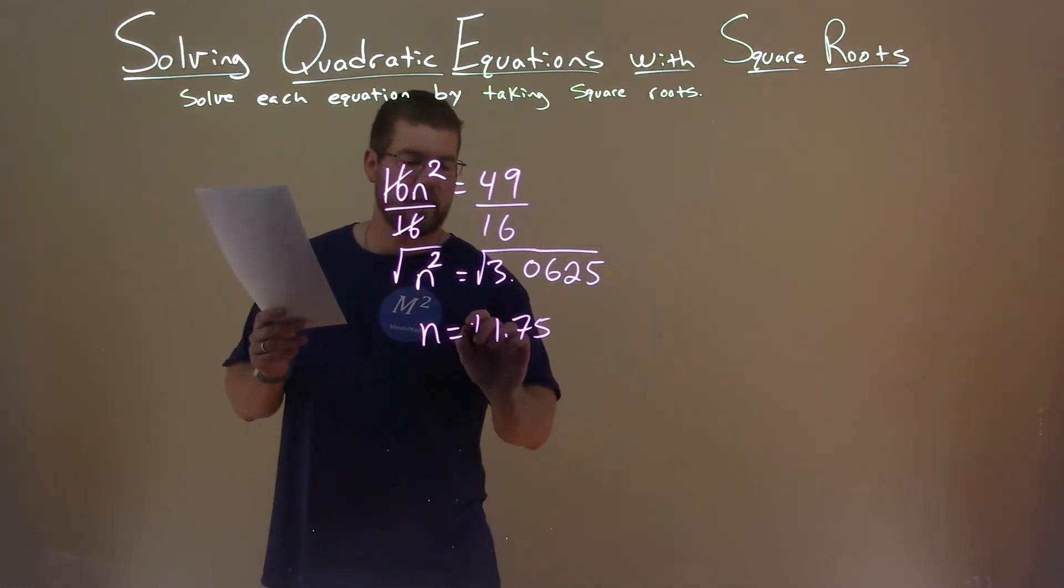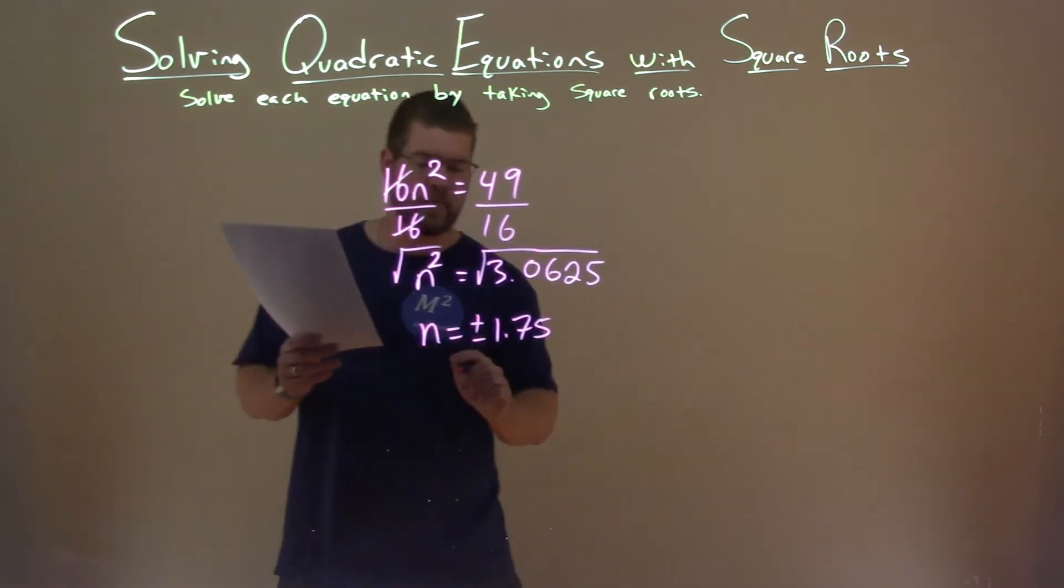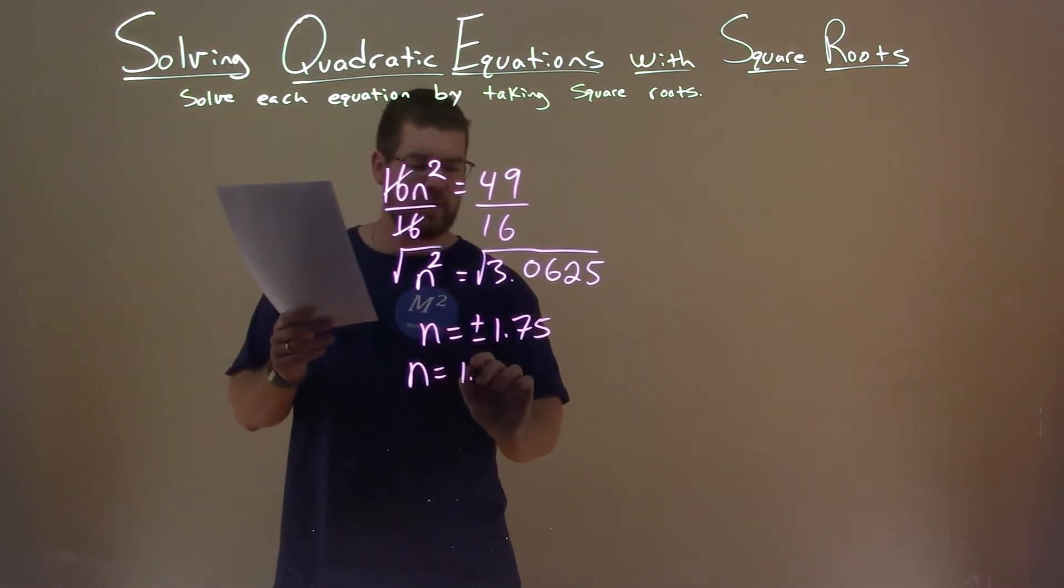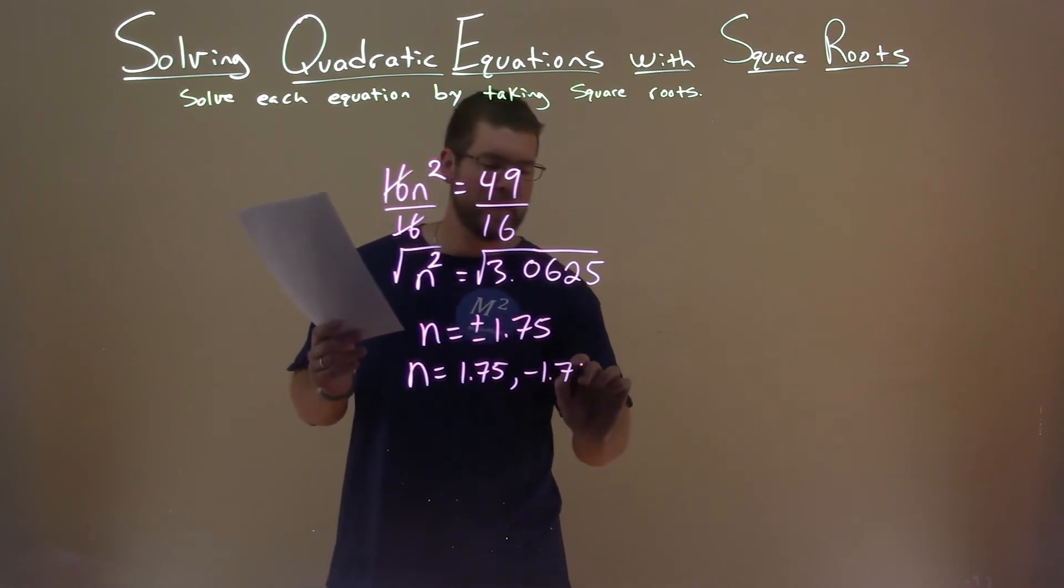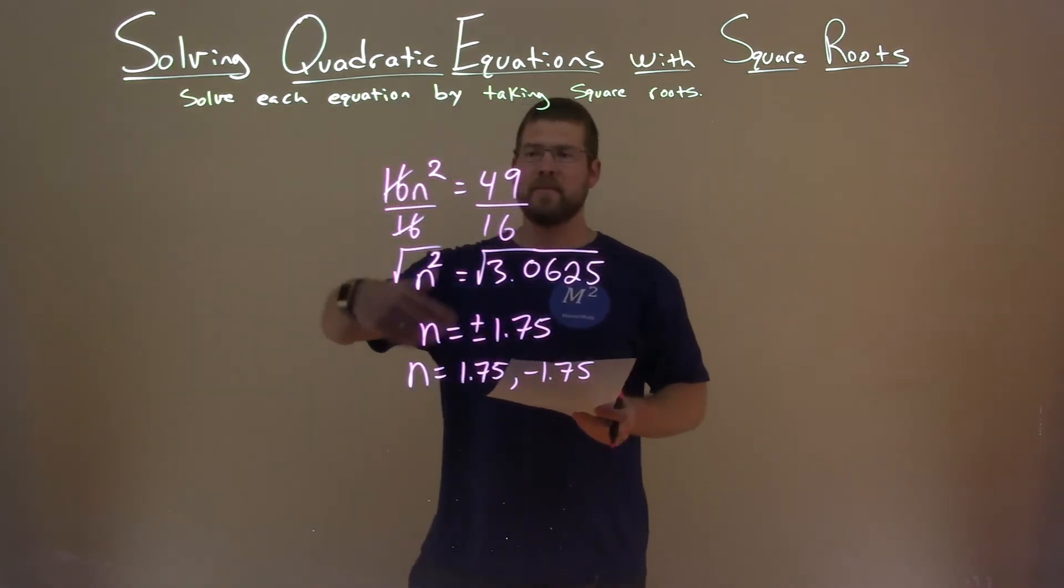But it's a plus and minus. We take the square root over the equal sign, we have positive and negative here. So that means n can be a positive 1.75 or a negative 1.75. Both of those values will work for n when you plug it back in to make this equation true.